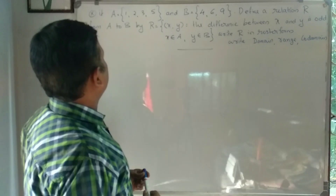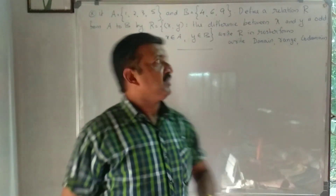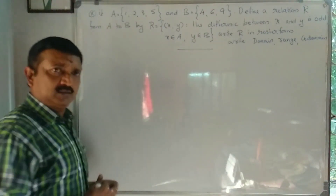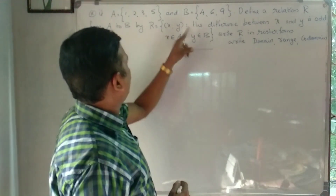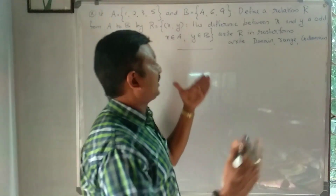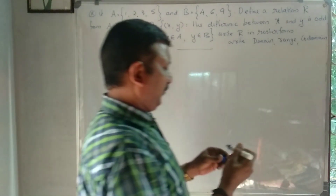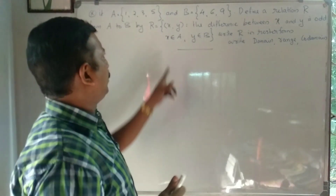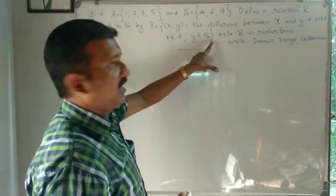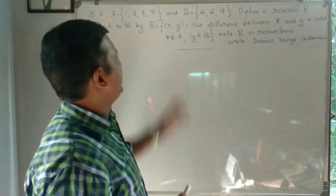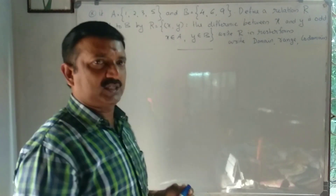If A is equal to {1, 2, 3, 5} and B is equal to {4, 6, 9}, define a relation R from A to B by R = {(x, y) : the difference between x and y is odd}. Write R in roster form.